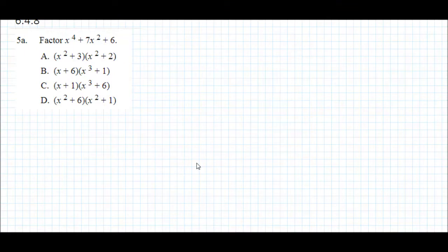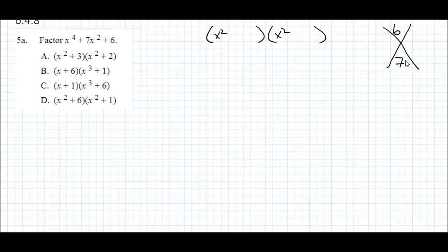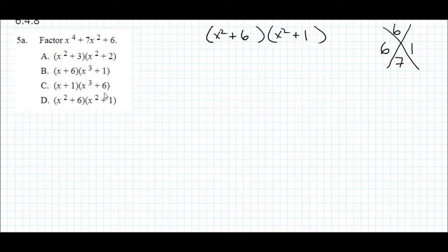Factor x⁴ + 7x² + 6. Since it's x⁴ and x², we can treat it like a quadratic. We need a product of 6 and a sum of 7, both positive: that's 6 and 1. So the answer is (x² + 6)(x² + 1), which is answer D.